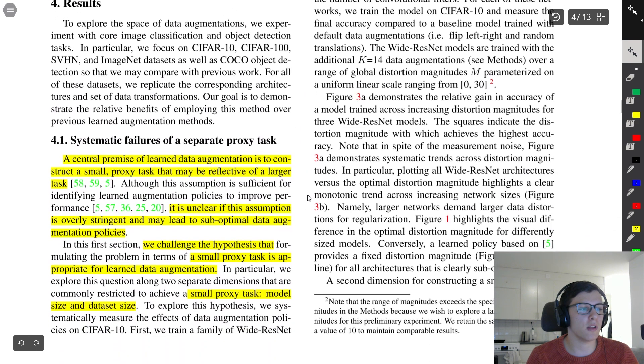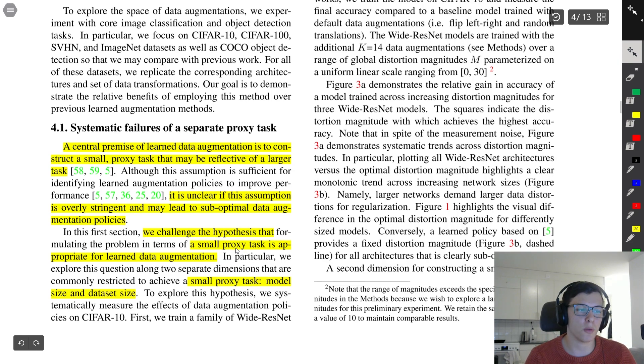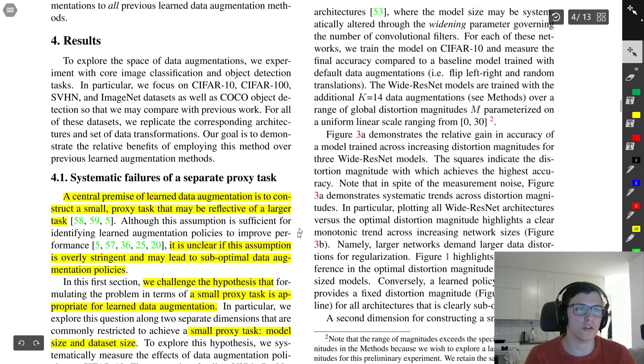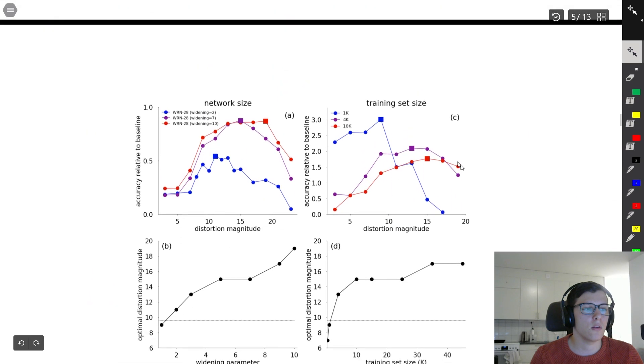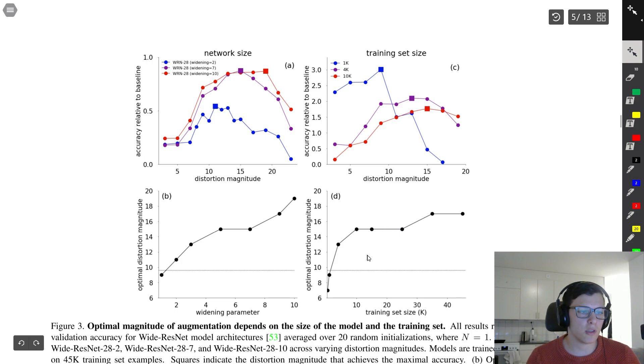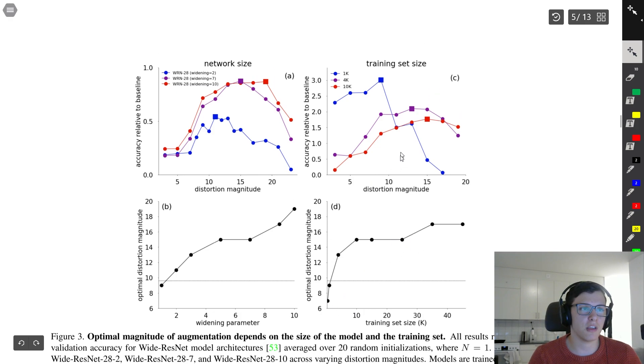For the results, they continue to challenge the hypothesis that finding the policy hyperparameters for a small proxy task is appropriate for extending to a larger task. If we scroll down, we can see here that if we look at the bottom right graph, the optimal distortion magnitude actually increases as we increase the training set size, which perhaps is not intuitive at first. You would imagine that it would be more important to have more data augmentation for smaller dataset sizes, but they show the opposite, which is quite interesting.